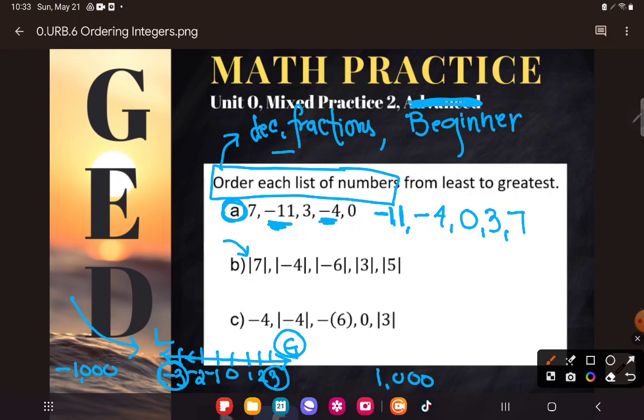And so these number lines, if you can draw them out or envision them will really help you in situations like this, because the same order that they would appear on the number line is the least to greatest order. So nice, not too bad for A. But now looking at B, there's actually some work we should do to simplify these examples before we try to order them.